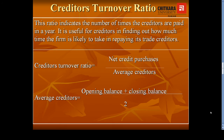The third important activity ratio is Creditors Turnover Ratio. This ratio indicates the number of times the creditors are paid in a year — that means how many times we are paying back the money or loan amount to our creditors. This ratio will be calculated by dividing net credit purchases by average creditors.